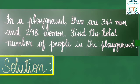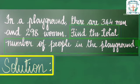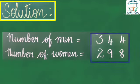Solution: Here we need to find the total number of people in the playground. The number of men and the number of women are given here. So, write: number of men is equal to 344, number of women is equal to 298.